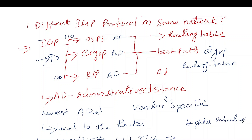This covers variable-length subnet masking. The preferred and best route is determined by the IGP calculation process.